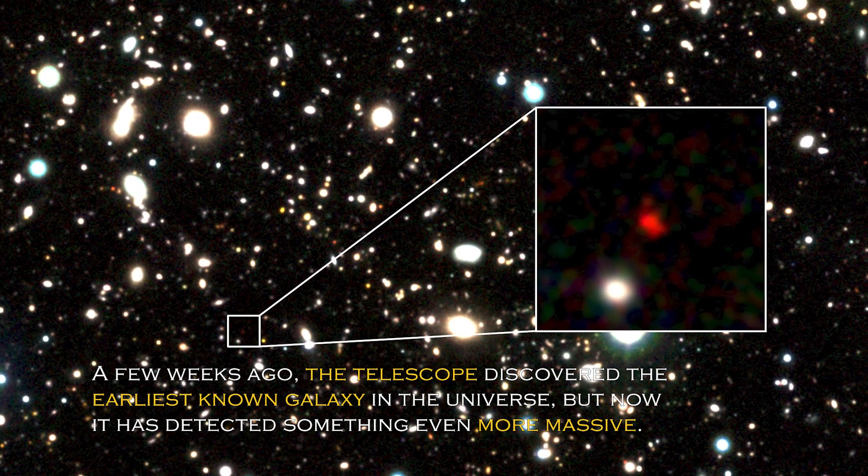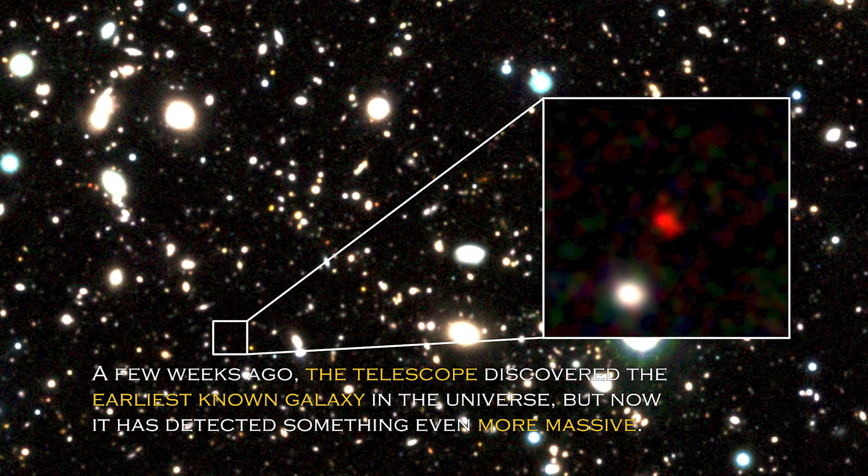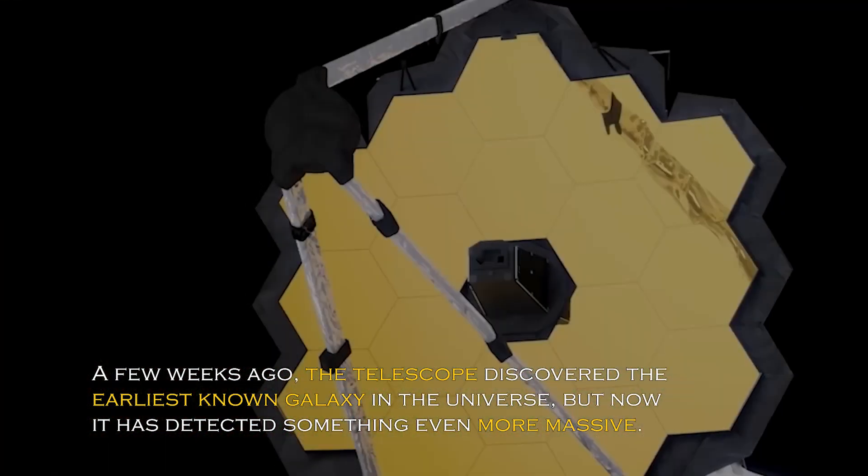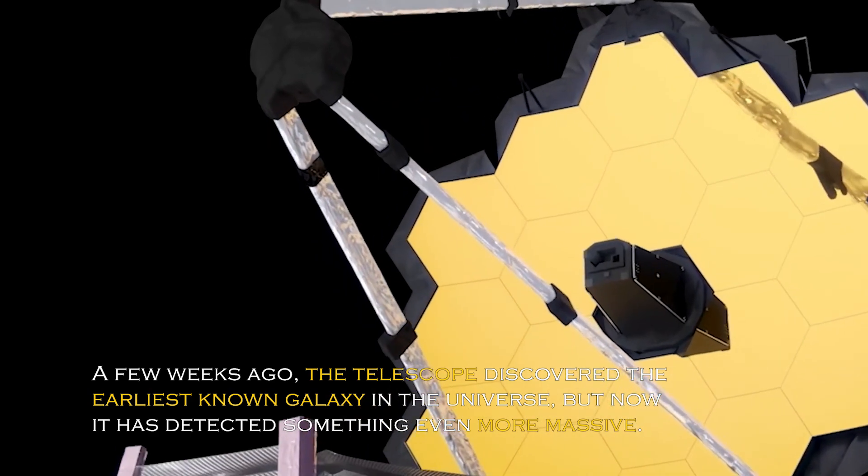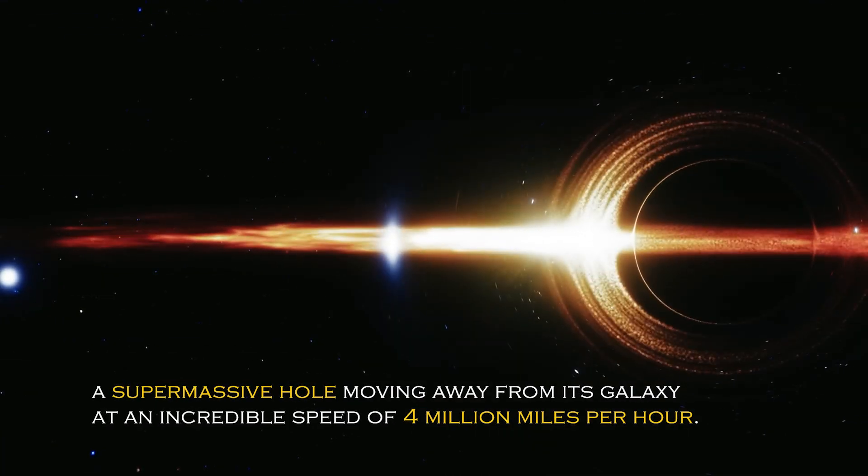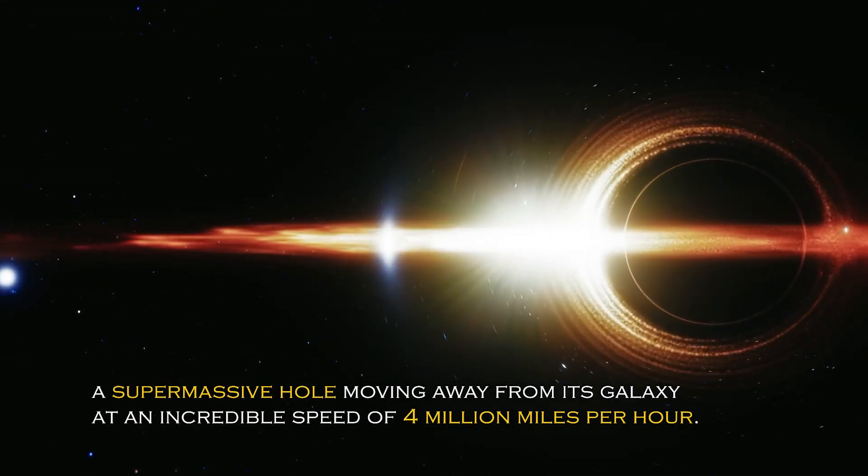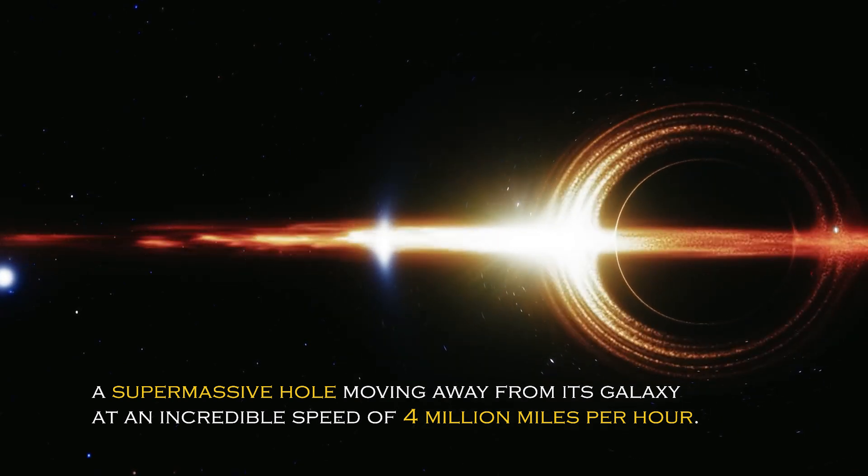A few weeks ago, the telescope discovered the earliest known galaxy in the universe, but now it has detected something even more massive – a supermassive black hole moving away from its galaxy at an incredible speed of 4 million miles per hour.